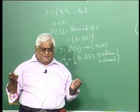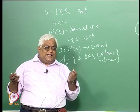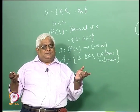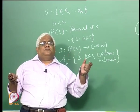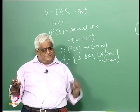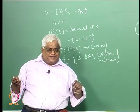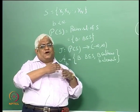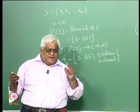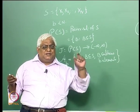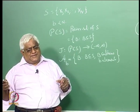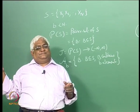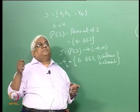You take one subset — say the subset containing x1 and x2. If you take x1 and x2 as your only features, what is the minimum probability of misclassification you can get? There is one value. Similarly for x1 and x3. Like that, for all 45 subsets you get a minimum probability of misclassification for each one.